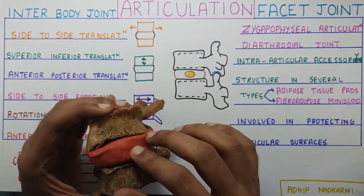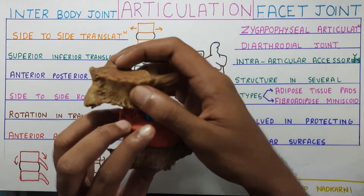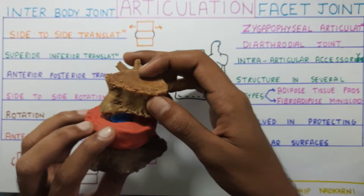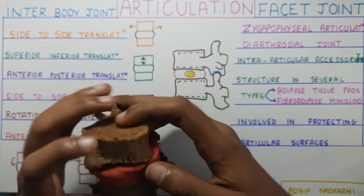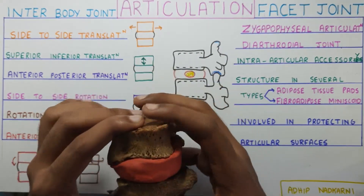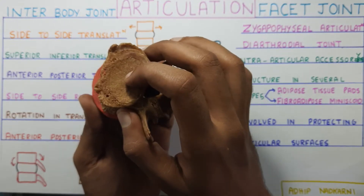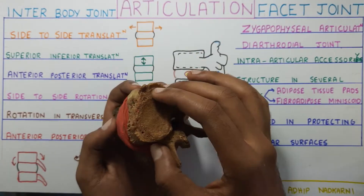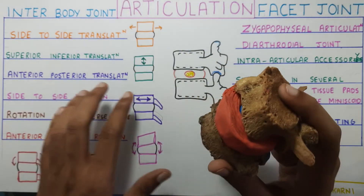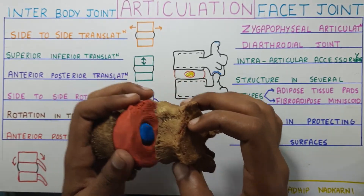There are different movements that occur at the interbody articulation. First is side-to-side translation — the vertebra moves from side to side. Obviously the movement is not that large; I'm just exaggerating so you can understand. Then there is superior-inferior translation, which is basically distraction — for example, when you're hanging on a wall or pole. Then there is anterior-posterior translation, which can occur in spondylolisthesis — that is the dislocation of the vertebra. So we have seen side-to-side, superior-inferior, and anterior-posterior translation.